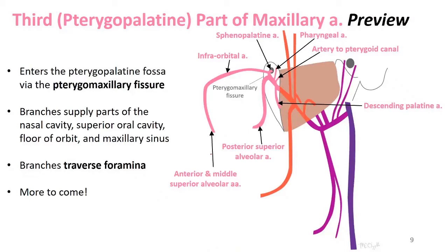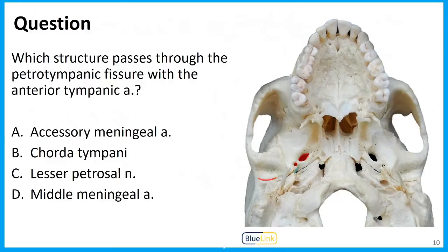The third part is just a preview here — you'll spend more time on the pterygopalatine fossa and its branches of the artery and maxillary nerve later. The named branches are not meant to be learned right now. The third part enters the pterygomaxillary fissure and gives off branches that all traverse foramina, supplying the nasal cavity, superior oral cavity, the floor of the orbit, and the maxillary sinus.